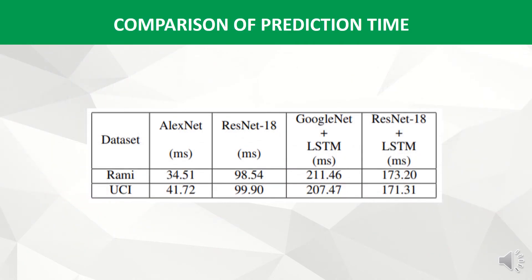Though ResNet-18 plus LSTM has given high accuracy, we are developing a control scheme for real-time use of a low-cost prosthetic hand. So in terms of complexity, LxNet is less complex. LxNet takes the least time at 34.51 milliseconds and 41.72 milliseconds in the two datasets, and we also noticed that LxNet has a good accuracy as well.